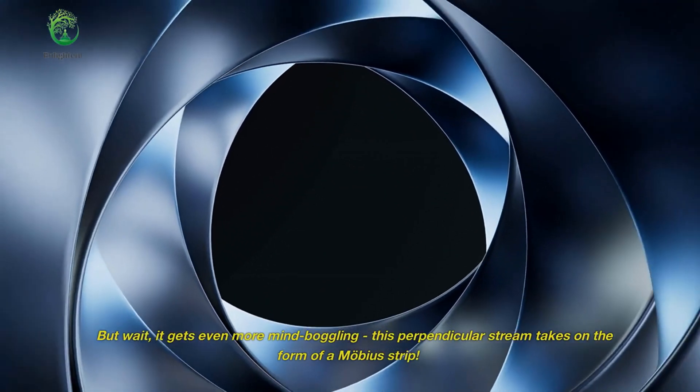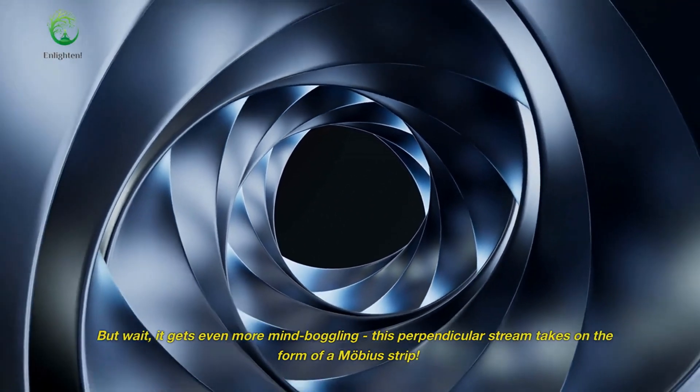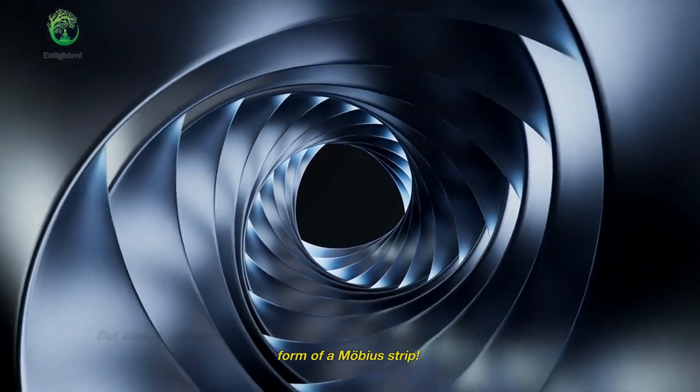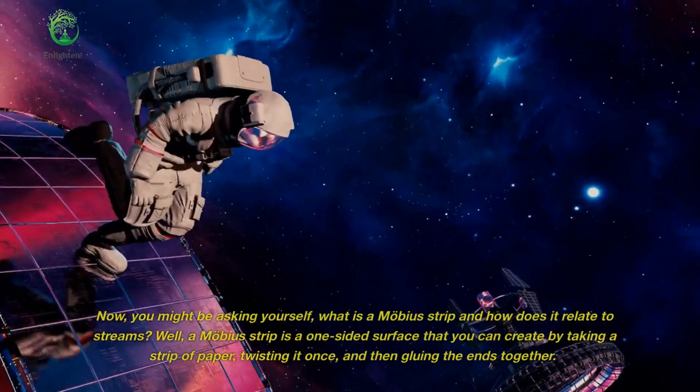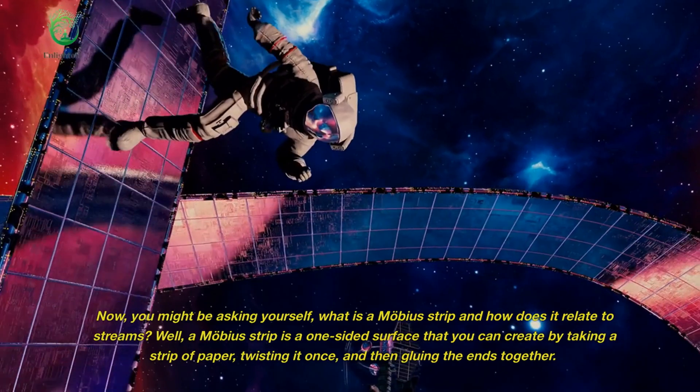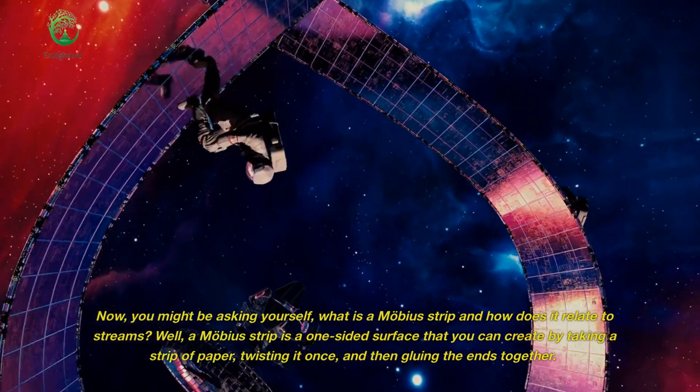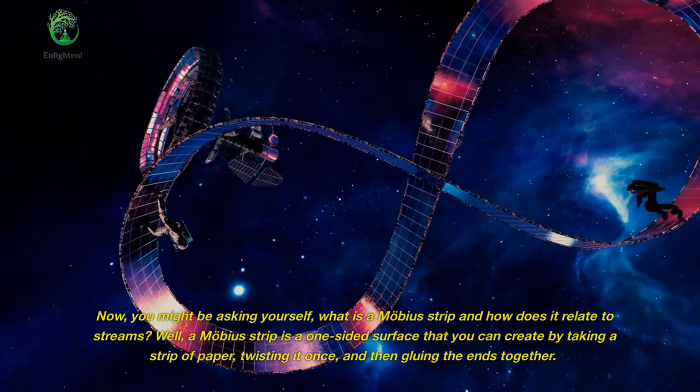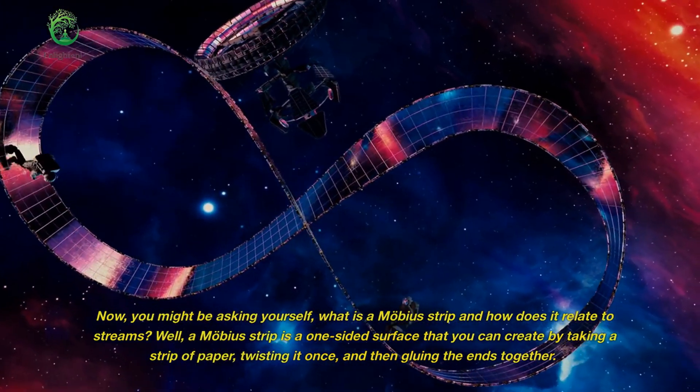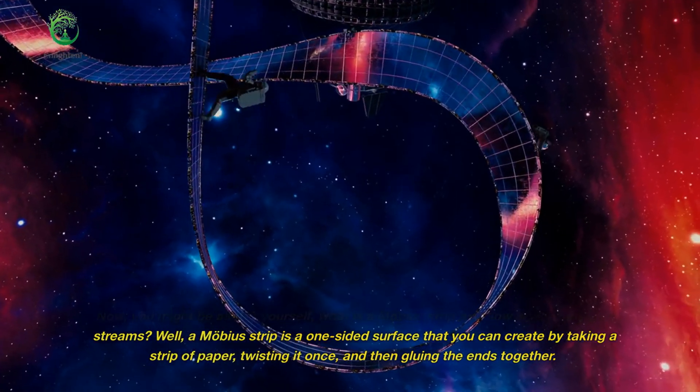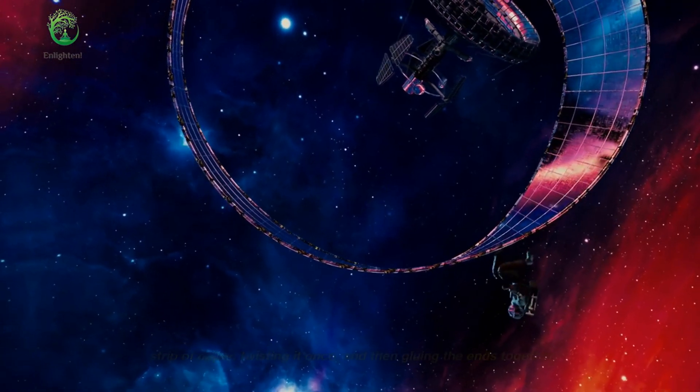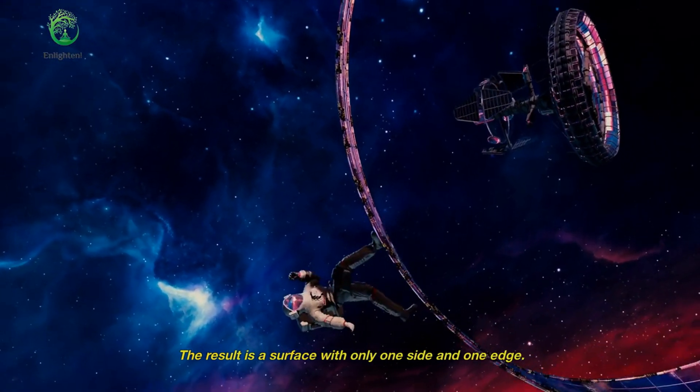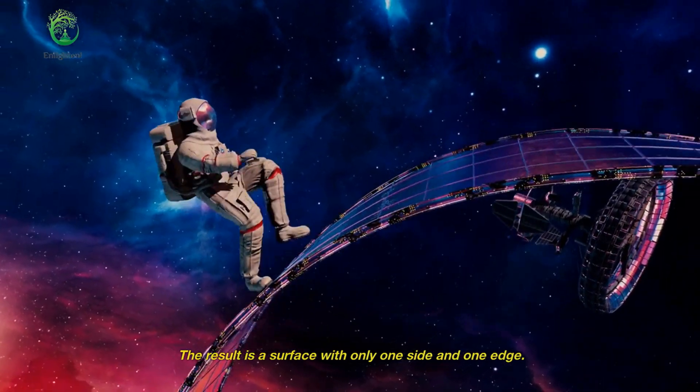But wait, it gets even more mind-boggling. This perpendicular stream takes on the form of a Mobius strip. Now, you might be asking yourself, what is a Mobius strip and how does it relate to streams? Well, a Mobius strip is a one-sided surface that you can create by taking a strip of paper, twisting it once, and then gluing the ends together. The result is a surface with only one side and one edge.